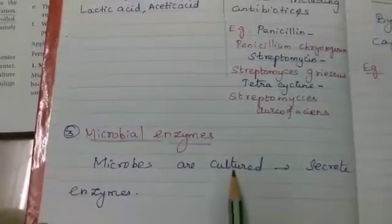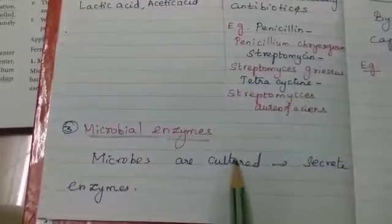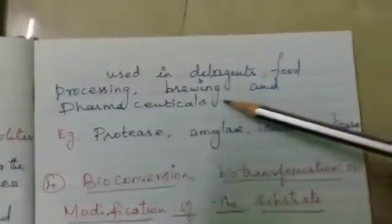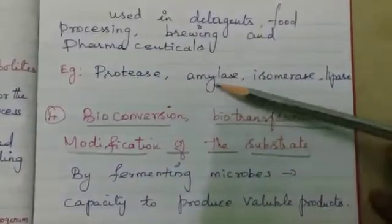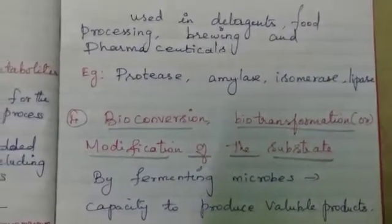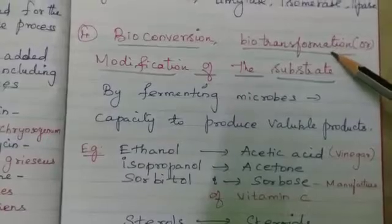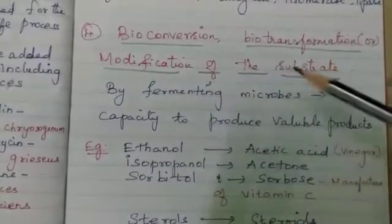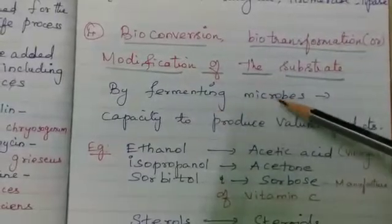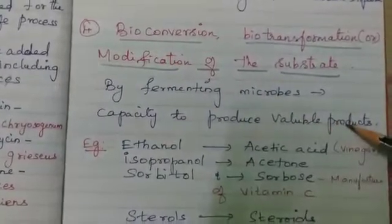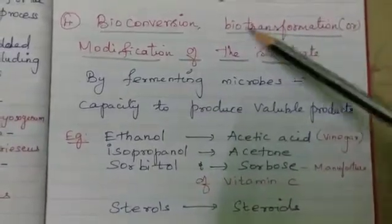The third application is microbial enzymes. Microbes that secrete enzymes are called microbial enzymes, and they are used for detergents, food processing, brewing, and pharmaceutical companies. The most commonly utilized enzymes are protease, amylase, isomerase, and lipase. The fourth application is bioconversion — the modification of a substrate using fermenting microbes to produce valuable products.